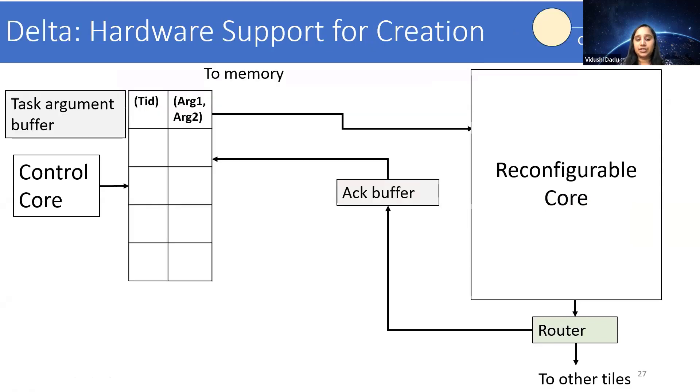So let's start with the creation edge. Here there are two broad components. First is the task argument buffer that maintains all the ready and pending tasks annotated with a TID. So for any pending tasks, there's an acknowledgment buffer, which will acknowledge the task that the data that you are waiting on is available and can set that task ready. The benefit of this task argument buffer is to greedily schedule tasks as they get ready. So as a working example, let's say the control code creates an explicit task T1, which will then go over the hardware and then be executed on the reconfigurable core, which can then create some dynamic tasks. So those dynamic tasks will go through this acknowledgment buffer and be stored in the task argument buffer till they get ready. And after that, they can also go and be scheduled on the reconfigurable core.